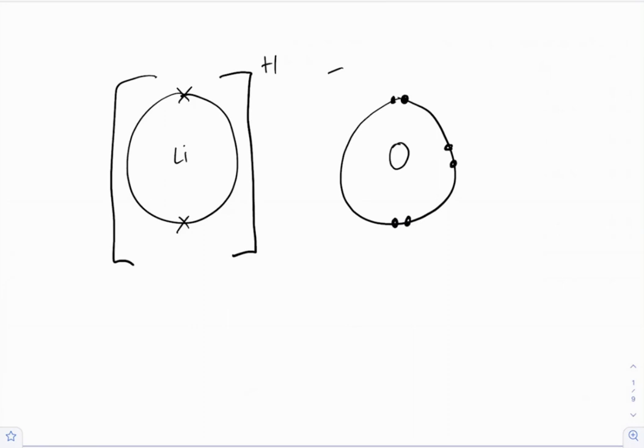Now each oxygen can only accept one electron from the lithium, and lithium only has one to give. So that would mean that lithium can't help oxygen out by itself. We're going to need two lithium ions, each giving one electron, to fill up the outer shell of oxygen. We show that by writing the times two next to the lithium.